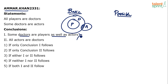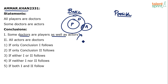Some doctors are players as well as actors — here I don't find any doctor who is a player as well as an actor. Doctors are either players or actors. There is not even one doctor which satisfies both. For this to be true, all three circles should overlap. But here, only two circles are overlapping in any given area.